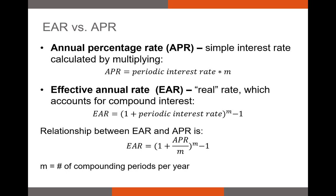Now let's look at the difference between the Annual Percentage Rate (APR) and the Effective Annual Rate (EAR). The APR is a simple interest rate that doesn't account for compound interest — calculated by multiplying the periodic interest rate by the number of compounding periods M. The EAR is our real rate of return that accounts for compound interest, calculated as (1 + periodic rate)^M minus 1. We can convert between EAR and APR.